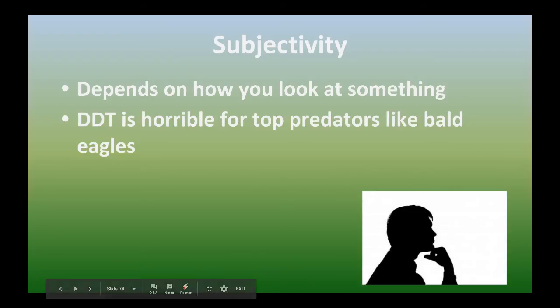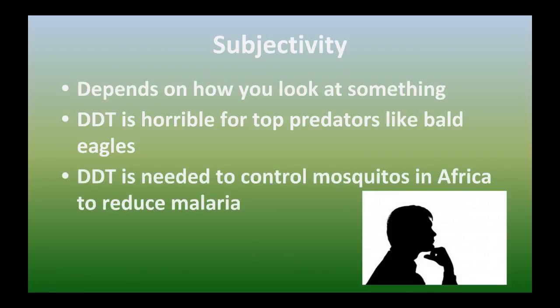Another example we talked about was DDT. You know, it's horrible. Eagle's eggs were becoming soft and they were becoming endangered. But then again, mosquitoes carry malaria that could, you know, affect the human population. So again, where do you sign? And it all goes back to this subjectivity of personal opinion and values. So sometimes there is no right answer.